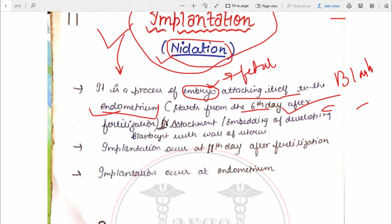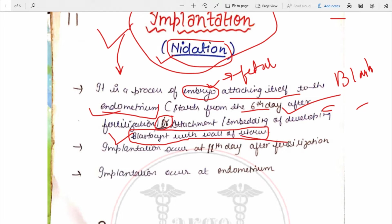The second definition of implantation is: attachment and embedding of the developing blastocyst into the wall of the uterus. As I mentioned, on the fifth day the blastocyst develops — we saw this in the pre-embryonic period. After the fifth day, implantation starts on the sixth day, and the blastocyst attaches and embeds into the endometrium wall.